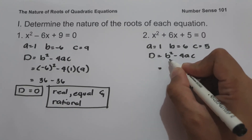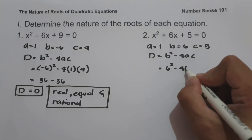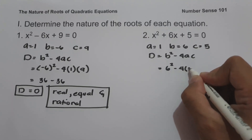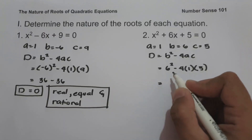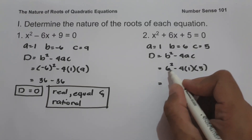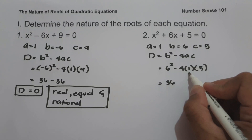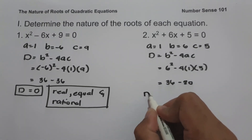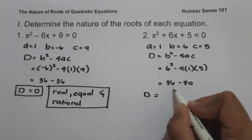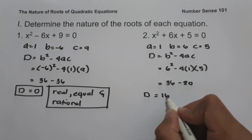So we are going to have b, that is 6, squared minus 4 times a, which is 1, and c, that is 5. 6 squared is 36. Negative 4 times 1 is negative 4, and negative 4 times 5 is negative 20. So the value of the discriminant is 36 minus 20, that is 16.